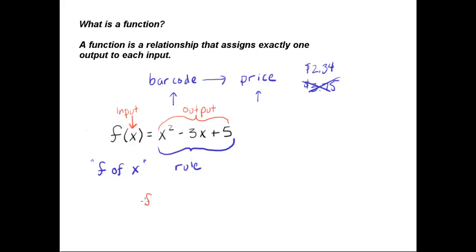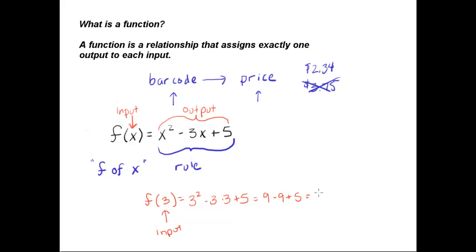If we were supposed to find f of 3, the 3 is the input. The rule tells us how we have to evaluate our function, or how we have to find our output. We take 3 squared minus 3 times 3 plus 5, so that would equal 9 minus 9 plus 5, or 5. And the 5 here would be our output, or the simplified version of our output.